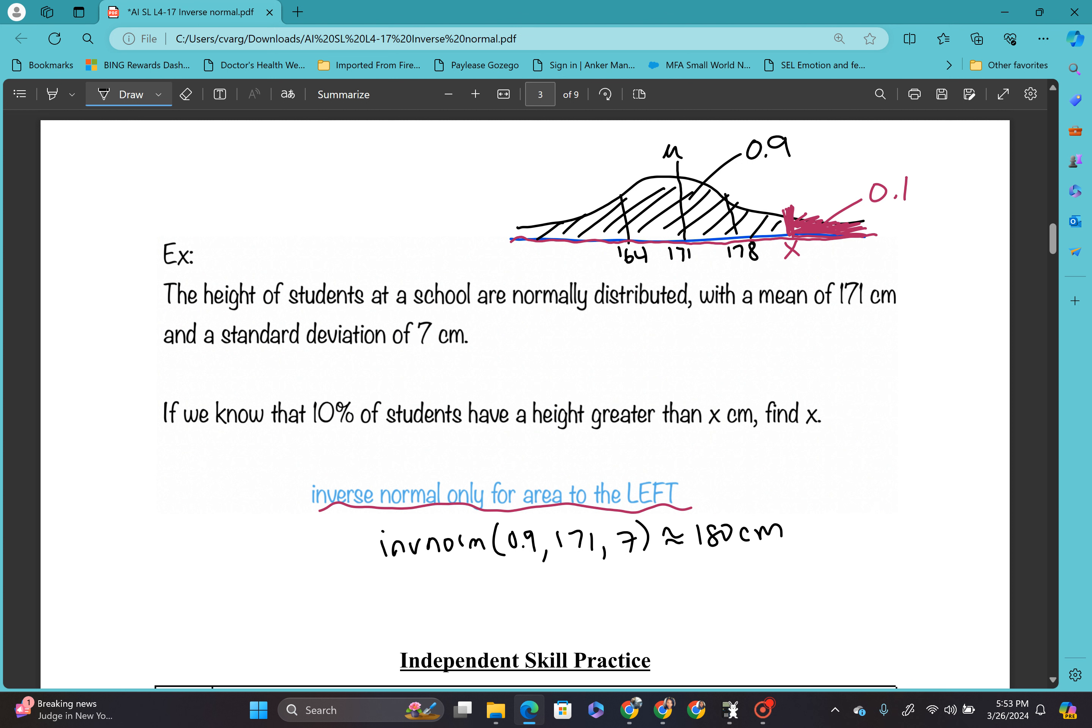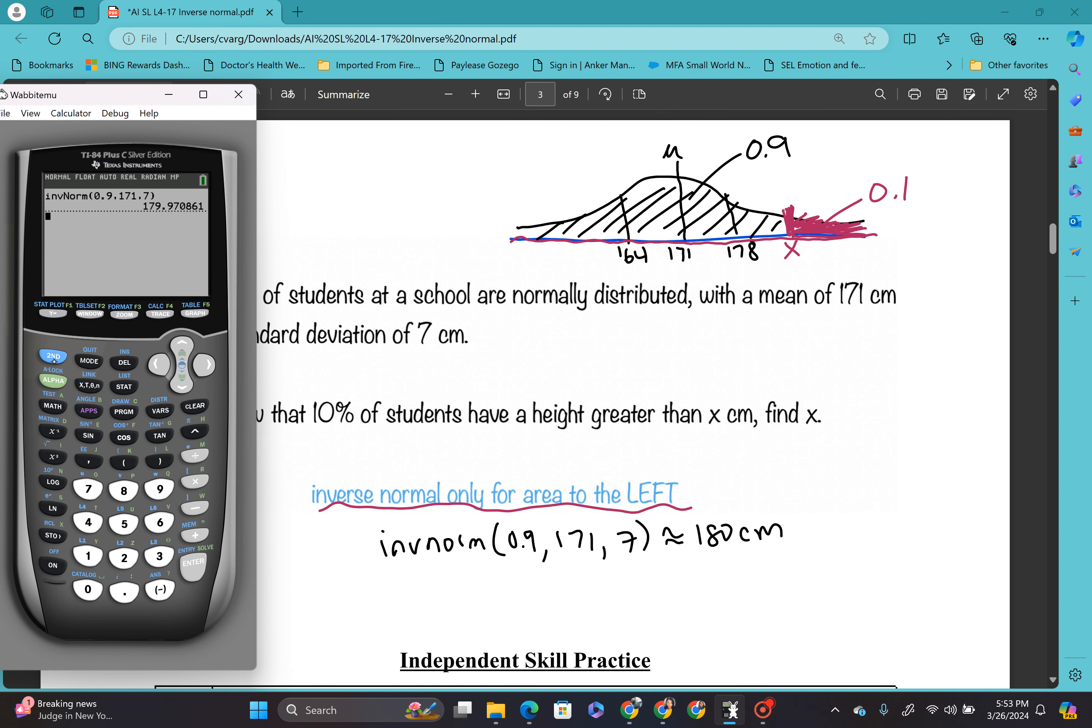So what if we forgot that it's talking about only the area to the left. And what if we put in our calculator, we did inverse norm. So second vars, option number three again. And instead of 0.9, if we put 0.1 for 10%, and we hit enter.